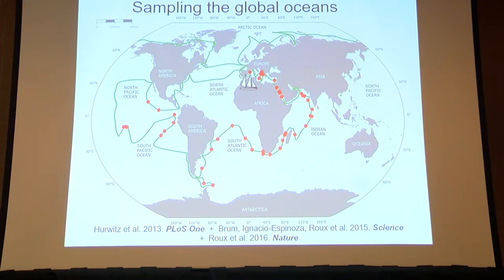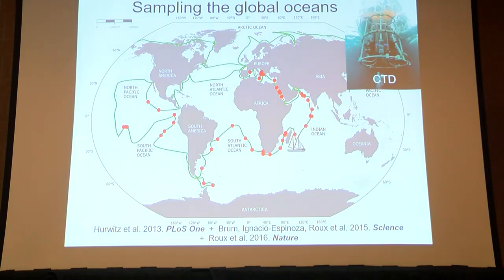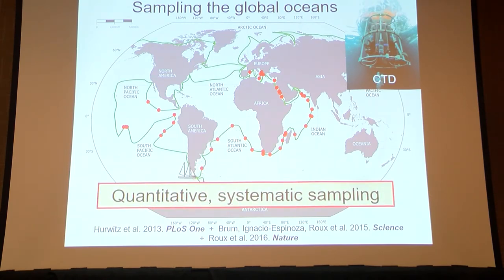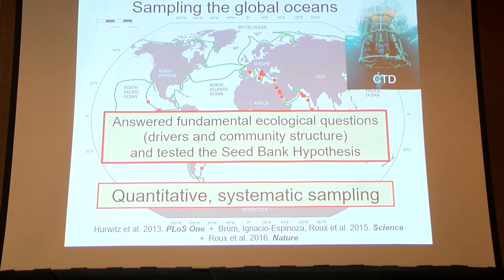The sailboat goes around the world, and at each of those sample sites the boat stops for 24 to 48 hours and deploys a CTD — a device with roughly 10-liter bottles that can be fired at different depths to sample the water. The effort was designed to be both quantitative and systematic to allow datasets to be intercomparable, and a number of papers came out looking at fundamental ecological questions like drivers of community structure.